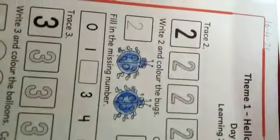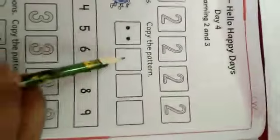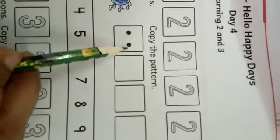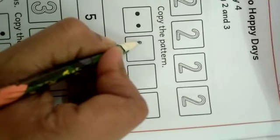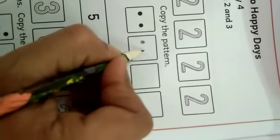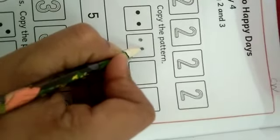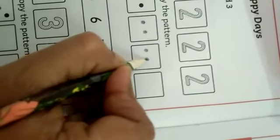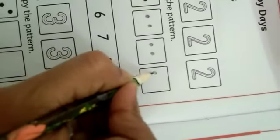You can take colour of your choice. Done. 1 and 2, 2 bugs. Now what will we do here? Copy the pattern. Here, how many dots? 1 and 2. So what will we do? We will copy this in the next boxes. This is 1 and 2. 1, 2. 1, 2. Done.